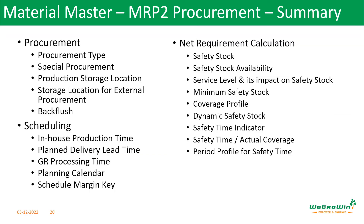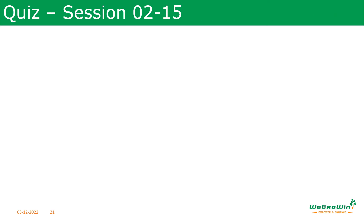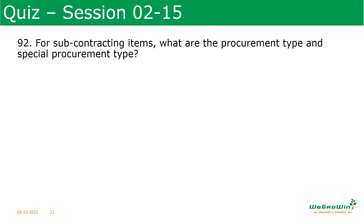In this session, we have the main parameters of MRP2: procurement type, special procurement type, store location for production, external procurement, backflush, in-house production time, planned delivery lead time, GR processing time, schedule margin, and safety stock — various parameters in this session.